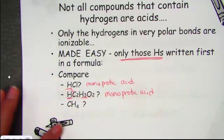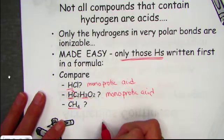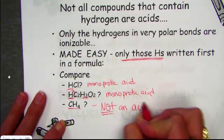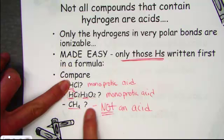The last example is natural gas, methane — CH₄. Even though there are four hydrogens, it is not an acid. So we try to make it as easy as possible for the reader: if it starts with an H, it's an acid. If the H's are buried later in the formula, they are not acid protons.